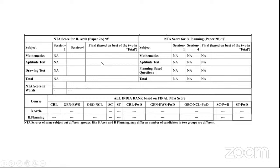Percentile basically means — let's say if they are saying 99 percentile — it means that you are ahead of 99 percent of the people who have written this particular exam. That is the basic meaning of percentile. Based on that, your rank would be published below the CRL. That's where you would be able to find the rank. If you belong to the OBC-NCL category and are eligible for that, you can check there as well.